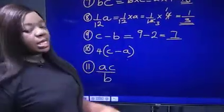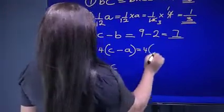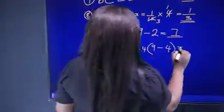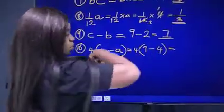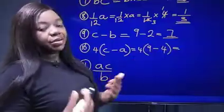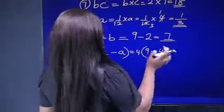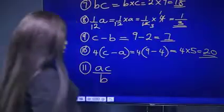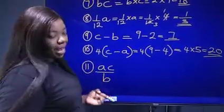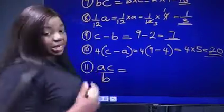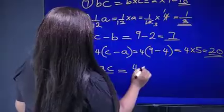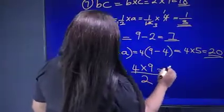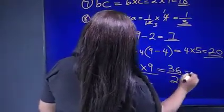Next: 4 times bracket c minus a. That equals 4 times bracket, with the value of c being 9 and the value of a being 4. So 9 minus 4 is 5. The bracket means you multiply the value outside the bracket by the value inside, so 4 times 5 equals 20. The next one is ac divided by b. That equals a times c divided by b: the value of a is 4, the value of c is 9, divided by b which is 2. So 4 times 9 is 36, and 36 divided by 2 equals 18.